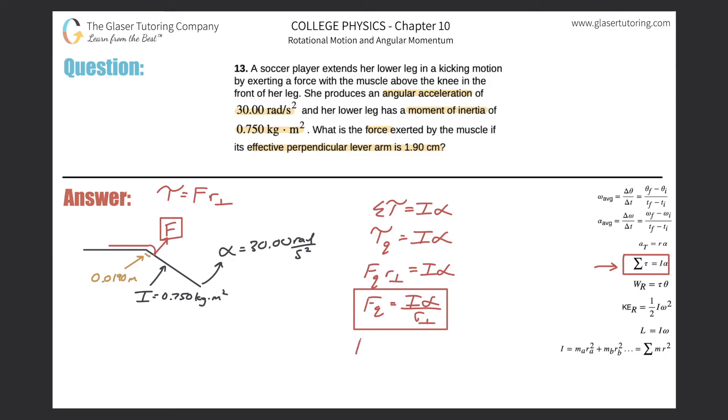All right, voila. So FQ is going to be equal to the moment of inertia. So that's 0.750 multiplied by the angular acceleration of 30.00 divided by then the perpendicular lever arm of 0.0190 meters. So here we go. Let's throw it into the calculator. So 0.75 times 30 divided by 0.019. And we get a value in how many sig figs. It looks like we should have three sig figs here. So this should be about 1,180. And that will be in terms of newtons. You can convert that into scientific notation if you like. That should be fine at this point.